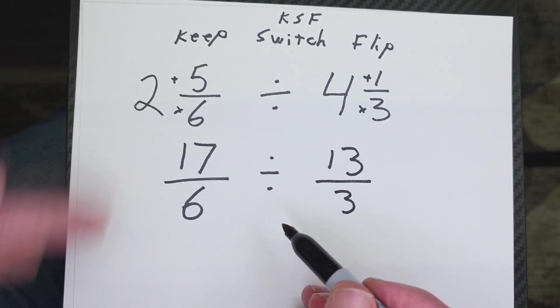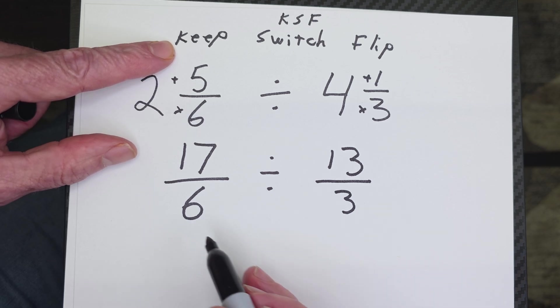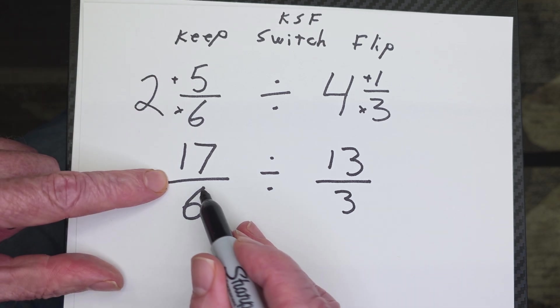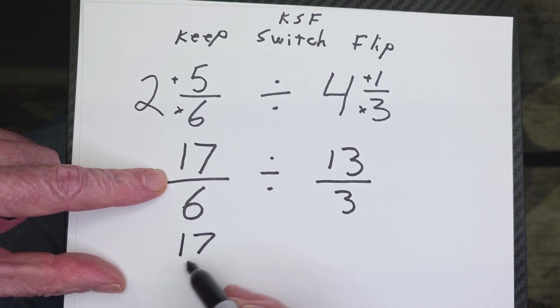All right, now what we do is that formula right here, the keep, switch, flip formula. And I'm going to keep this first number right here, the same fraction, 17 over 6.